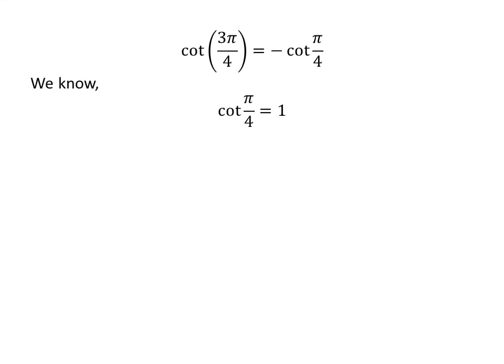We know cotangent of pi upon 4 is equal to 1. So cotangent of 3 times pi upon 4 is equal to minus 1.